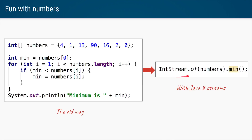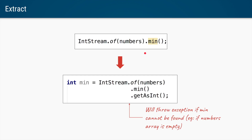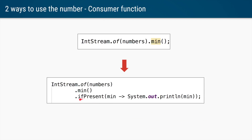With Java 8 streams you can achieve the same thing using only a single line of code. You can say IntStream.of(numbers).min(). This min function will not actually give you an integer — to extract an integer you have to call a method called getAsInt. This getAsInt method can throw an exception when numbers is an empty array, so you have to be careful. Another way to use min is to say: if that minimum is present, perform the following operation.